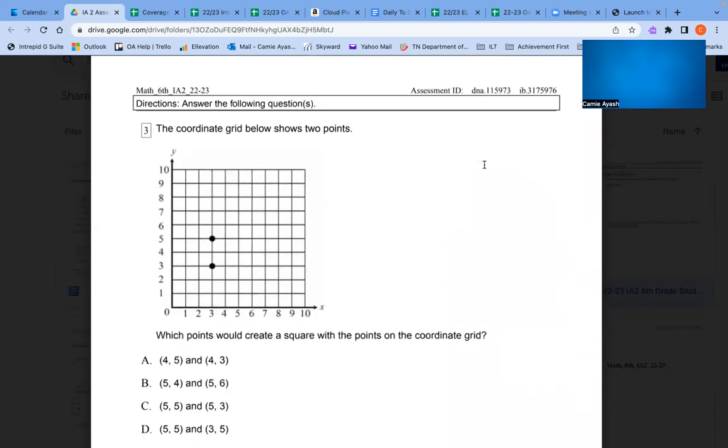The coordinate grid below shows two points. Which points would create a square with the points on the coordinate grid? A. 4, 5 and 4, 3. B. 5, 4 and 5, 6. C. 5, 5 and 5, 3. D. 5, 5 and 3, 5.